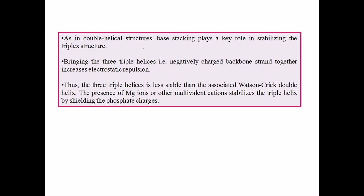As in double helical structures, base stacking plays a key role in stabilizing the triplex structure, along with hydrogen bonding. However, bringing three helixes together means three phosphate backbones, all negatively charged, are combined. This increases electrostatic repulsion, making the triple helix less stable than the Watson-Crick double helix.